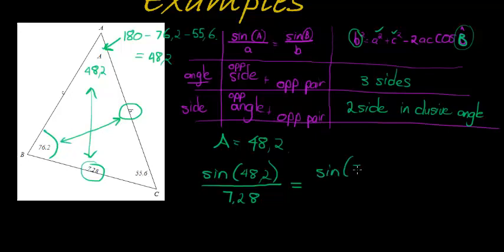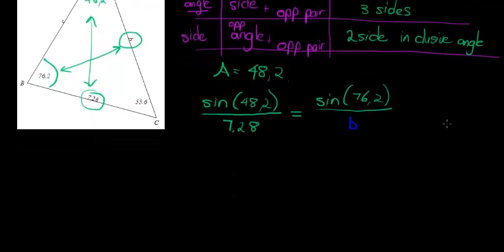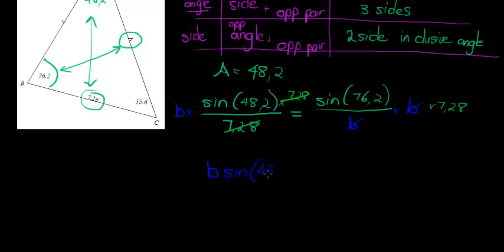In other words, sine of 76.2 divided by B, now B is unknown. How do we solve it? Well, we are going to multiply both sides with B to get B out of the denominator and we are also going to multiply both sides with 7.28 to get rid of the 7.28 in the denominator. So, at this point, we have B sine 48.2 is equal to sine 76.2 times 7.28.